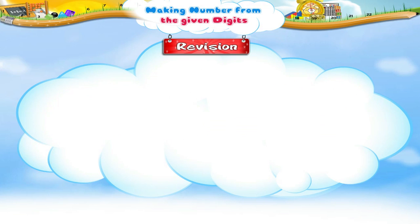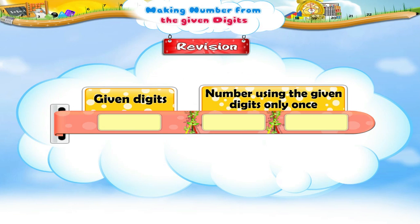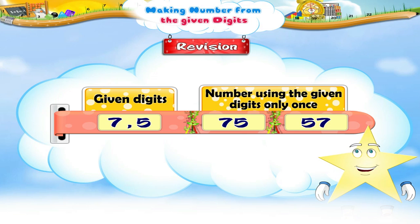Let us try once more. This time the digits are seven and five. Using the digits seven and five only once, we can make the numbers 75 and 57. Good, Starry!